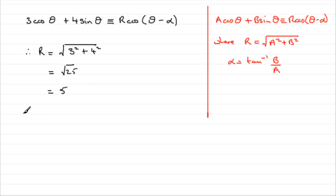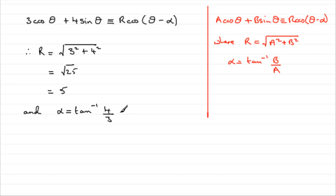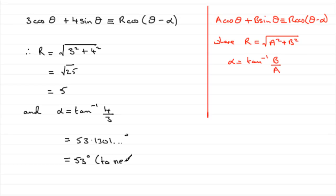As for alpha, we can see that alpha is the inverse tan of the b value over the a value — the inverse tan of b, which is 4, over the a value, which is 3. Make sure your calculator is in the right mode. For this question, alpha has to lie between 0 and 90 degrees, so we need degrees mode. Doing that gives 53.1301 degrees, which to the nearest degree is 53 degrees.